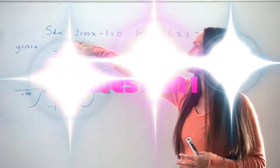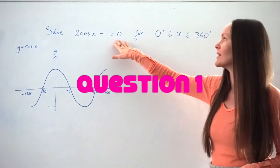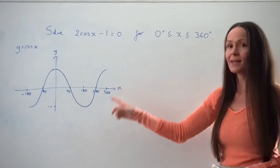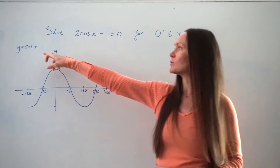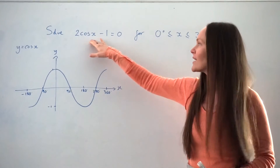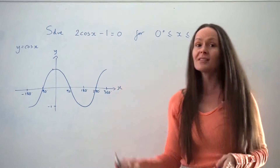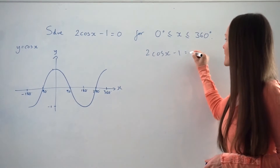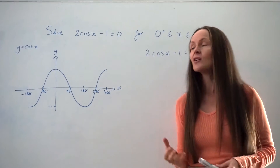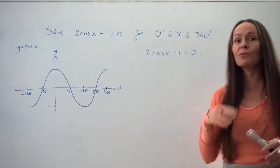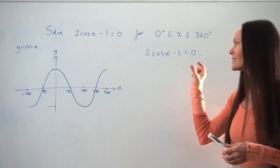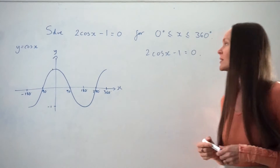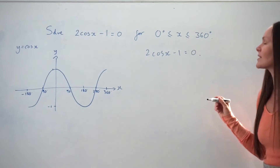In the first question, we have to solve 2 cos x minus 1 equals 0 for values of x between 0 and 360 degrees. I've done a quick sketch of the graph y equals cos x for this one because we're solving for cos x. So I'm just going to start by writing down this equation again over here. The first step is to rearrange the equation so that cos x is the subject — so that it says cos x equals, with all the other numbers on the right-hand side.